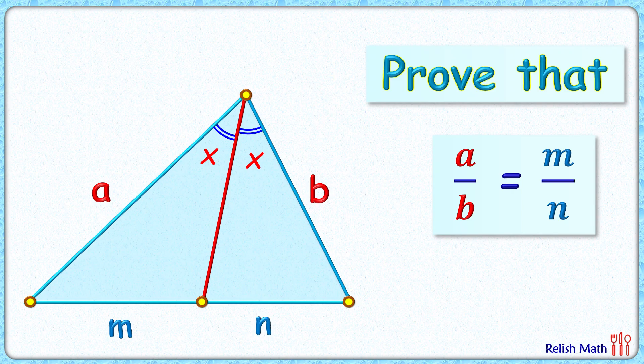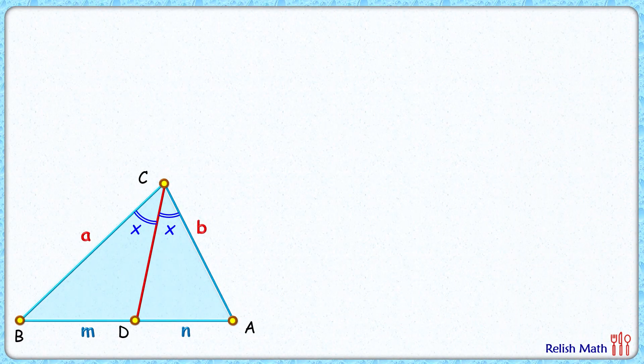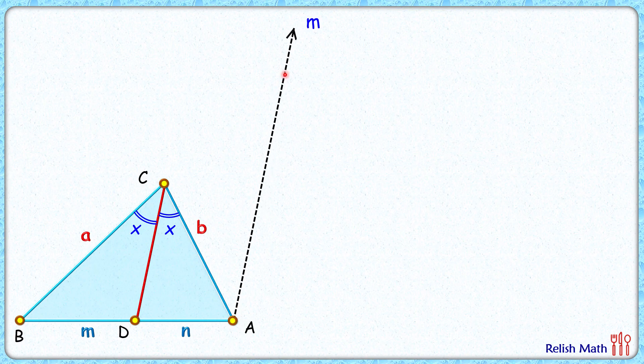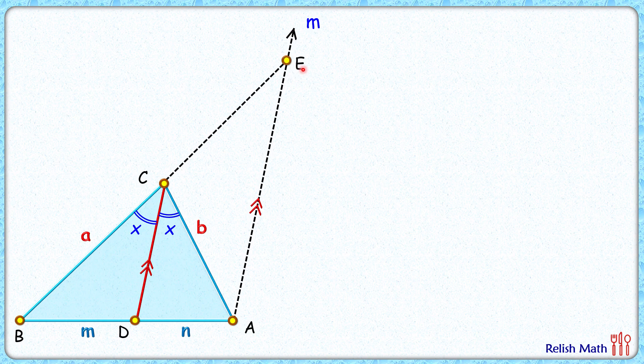Let's check this elegant proof. To start with, let's draw a line from point A such that this line is parallel to this angular bisector line CD. Also let's extend BC to meet this new line at point E.